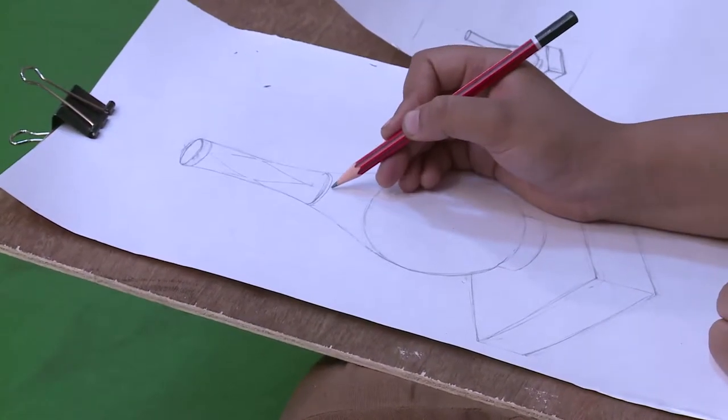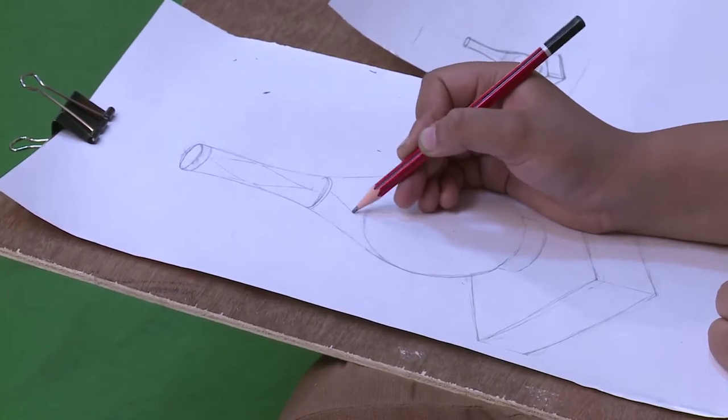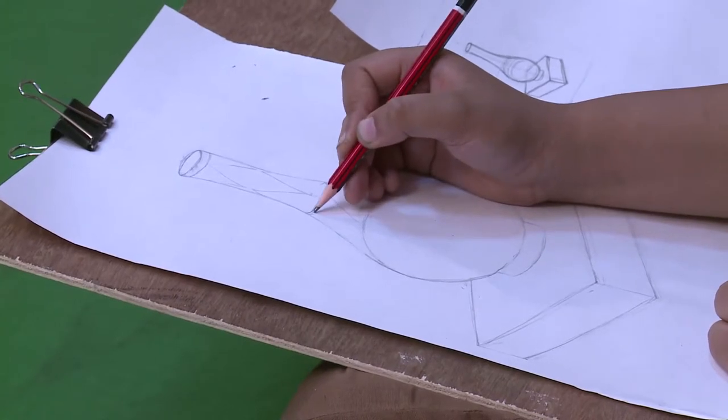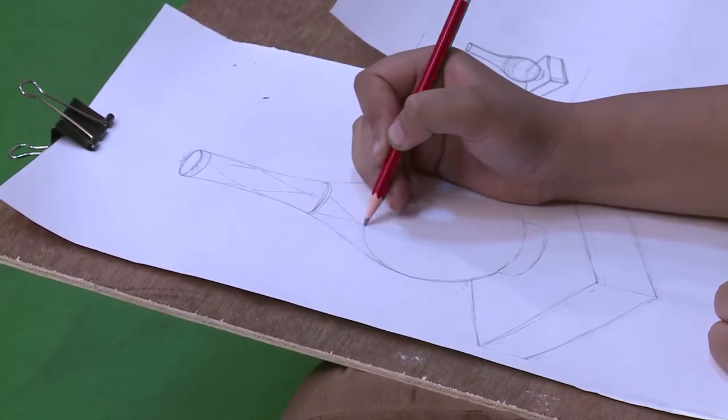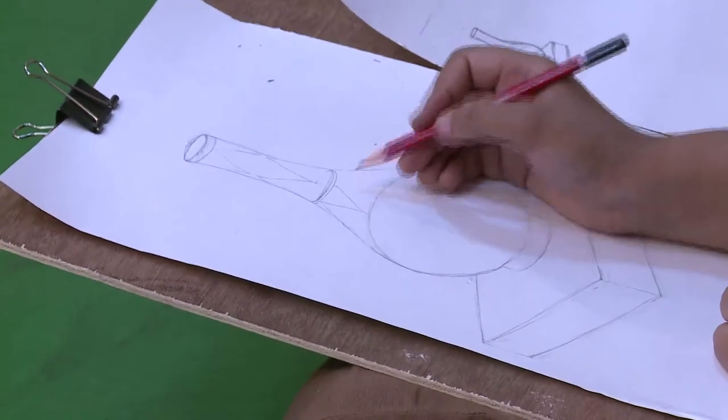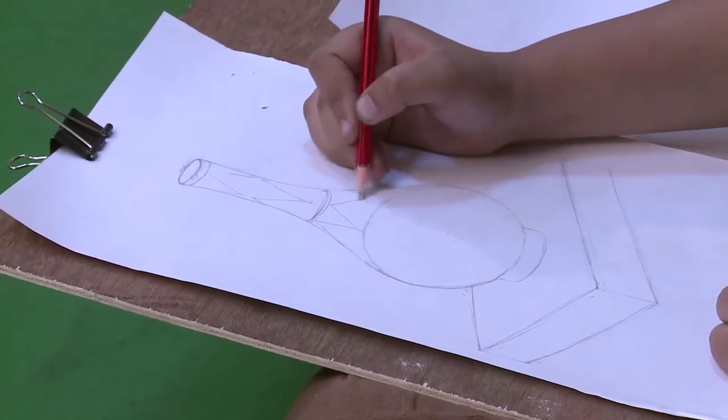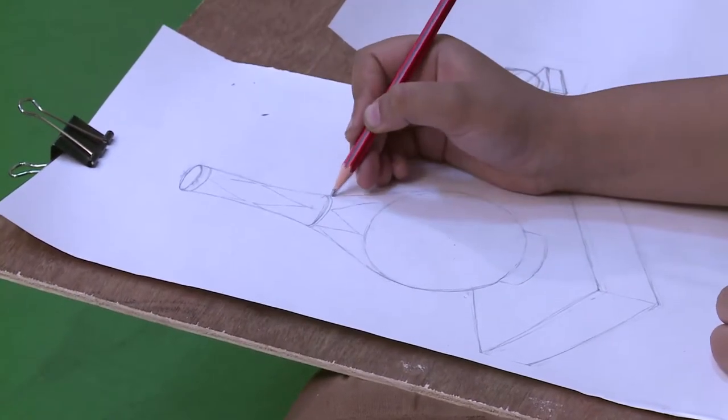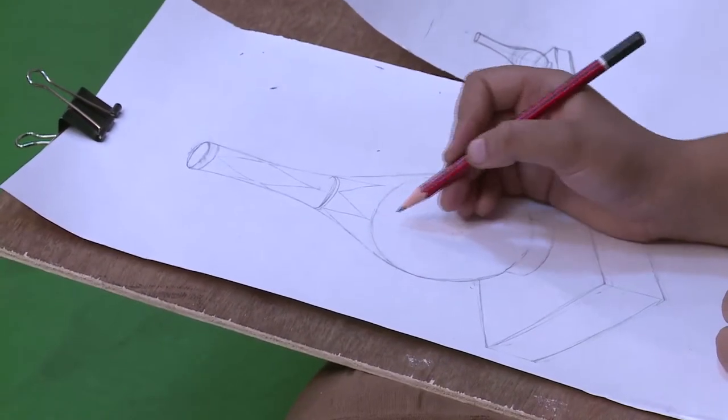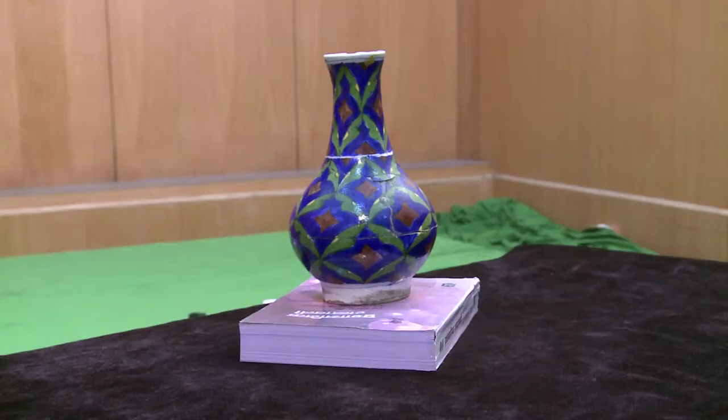The design actually has only three colors. One is ultramarine blue, then sap green and then brown. The design is more visible on the top part of it, while lower part almost invisible due to its bottomness and also due to the light is mostly falling from top.